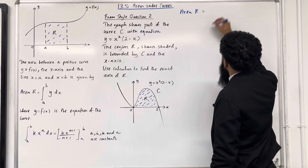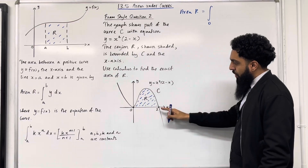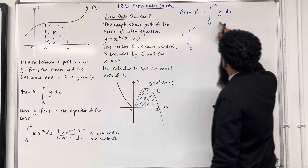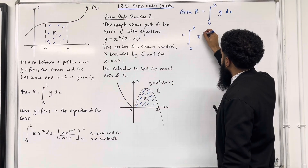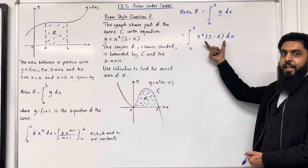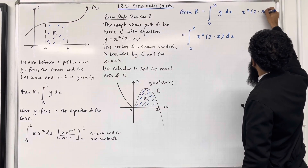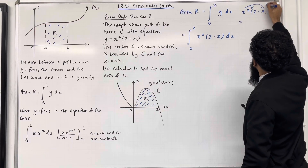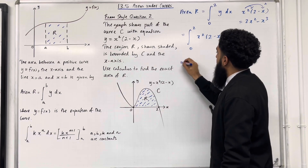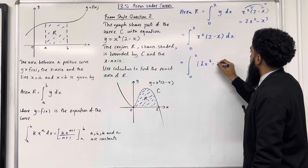Area R, by definition, is the integral from the lower limit — the x-coordinate here is 0 — to the upper limit — the x-coordinate here is 2 — of y dx. So we have the integral from 0 to 2 of x²(2 - x) dx. We can't integrate this as yet; we need to expand the brackets. x² multiplied by (2 - x) expands to give 2x² - x³. So we have the integral from 0 to 2 of (2x² - x³) dx.